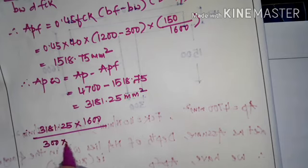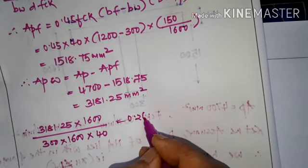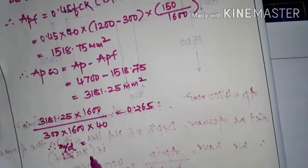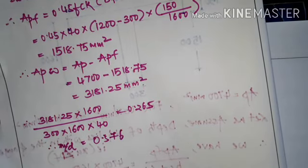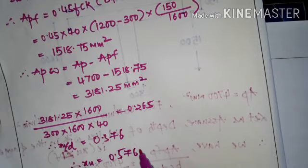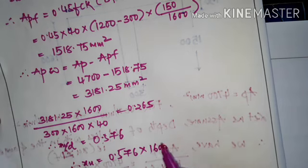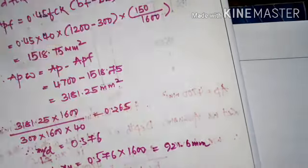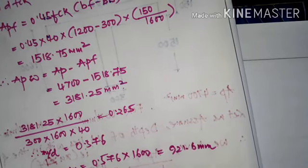Now the ratio = APW × FP / (BW × D × FCK) = (3181.25 × 1600) / (300 × 1600 × 40) = 0.265. From the table, after interpolation, XU/D = 0.576, so XU = 0.576 × 1600 = 921.6 mm, which is more than DF. Our assumption is correct.